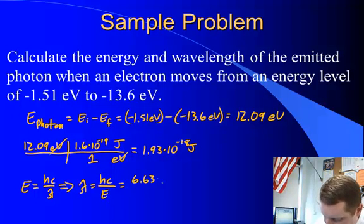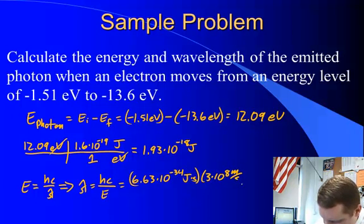Or 6.63 times 10 to the -34 joule-seconds, times 3 times 10 to the 8 meters per second, the speed of light or electromagnetic radiation in a vacuum, divided by the energy of our photon in standard units.